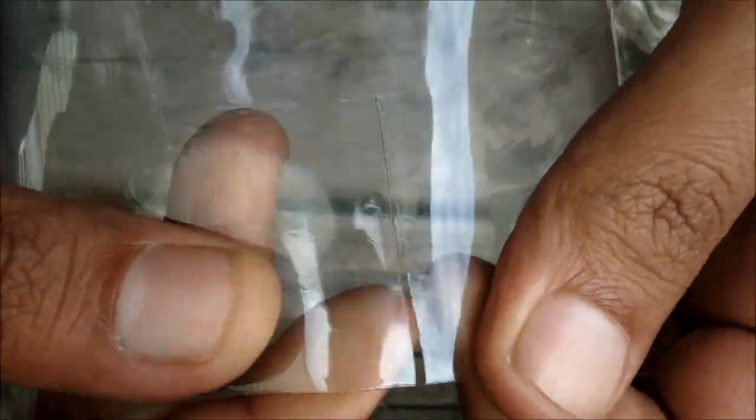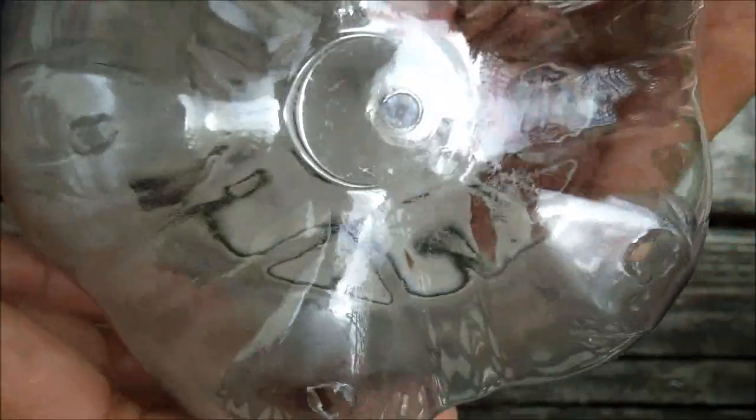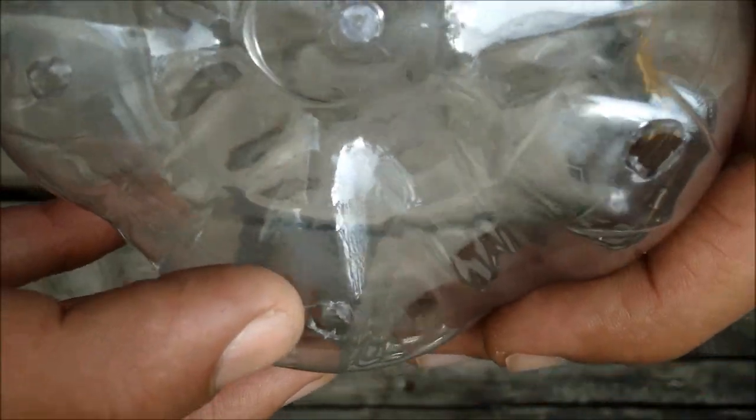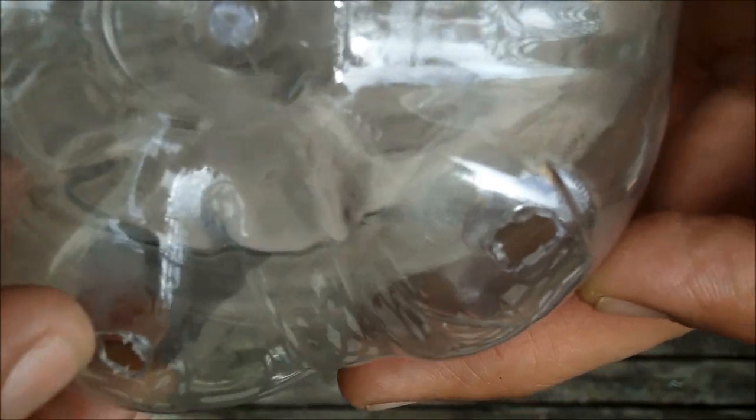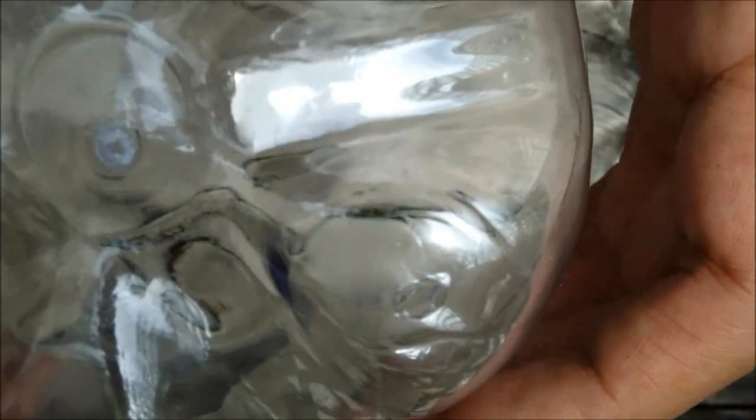into the side, and then you want to cut drainage holes in each of the little feet of the bottle like so. This allows water and excess moisture to drain out to prevent your seedlings from rotting or staying too wet.